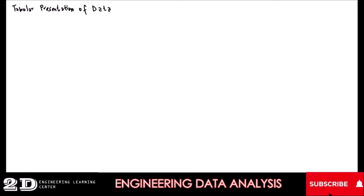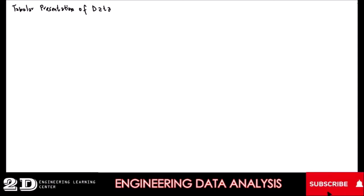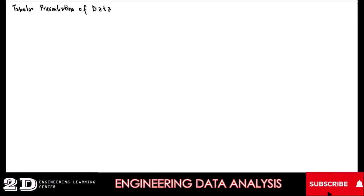At this moment we will be discussing about the tabular representation of data. This is under the topic of the presentation of data. We will first try to define or tackle about this tabular distribution of data. The most common way to present data in a tabular manner is by the frequency distribution table. But first we will try to define what is frequency.